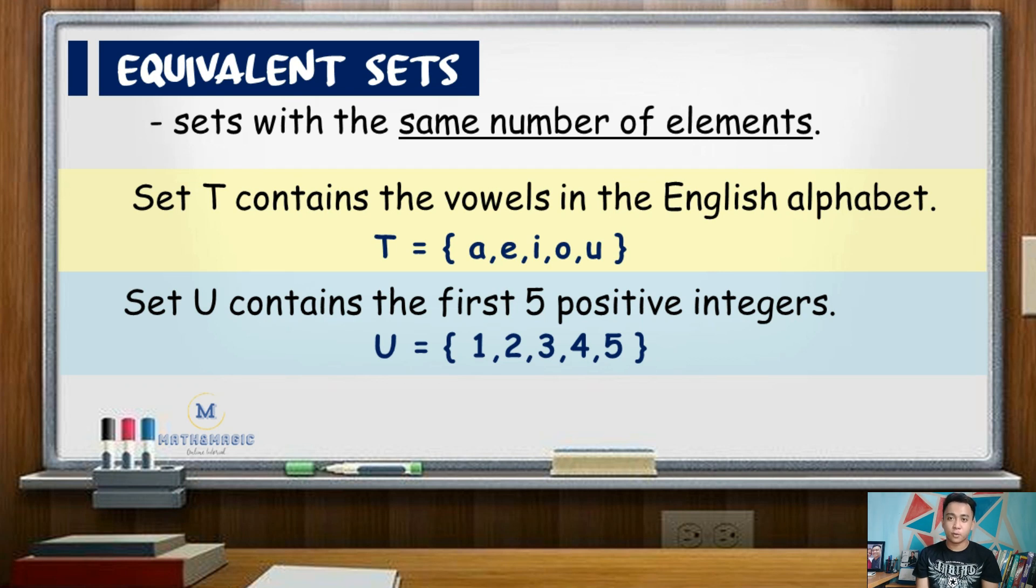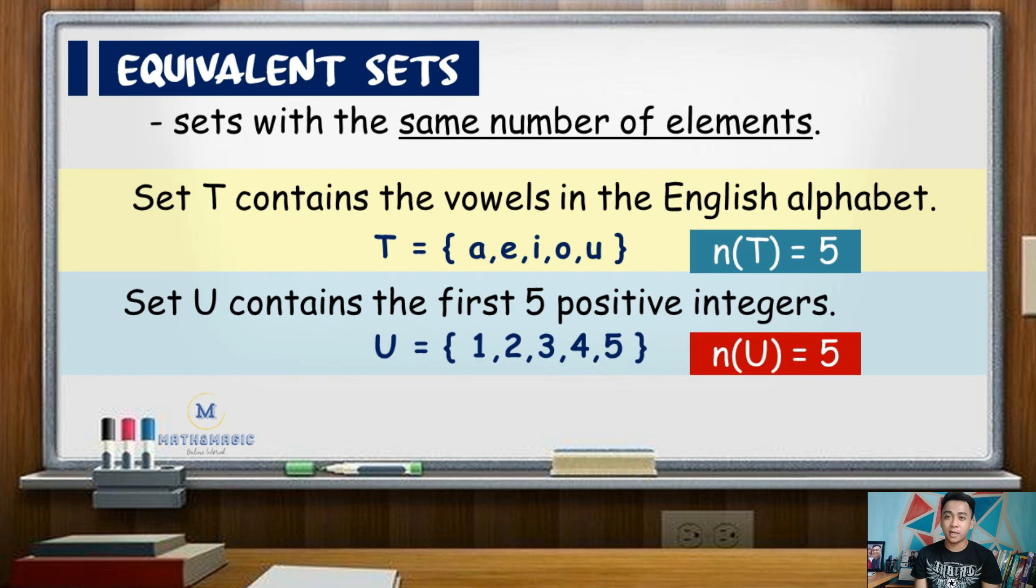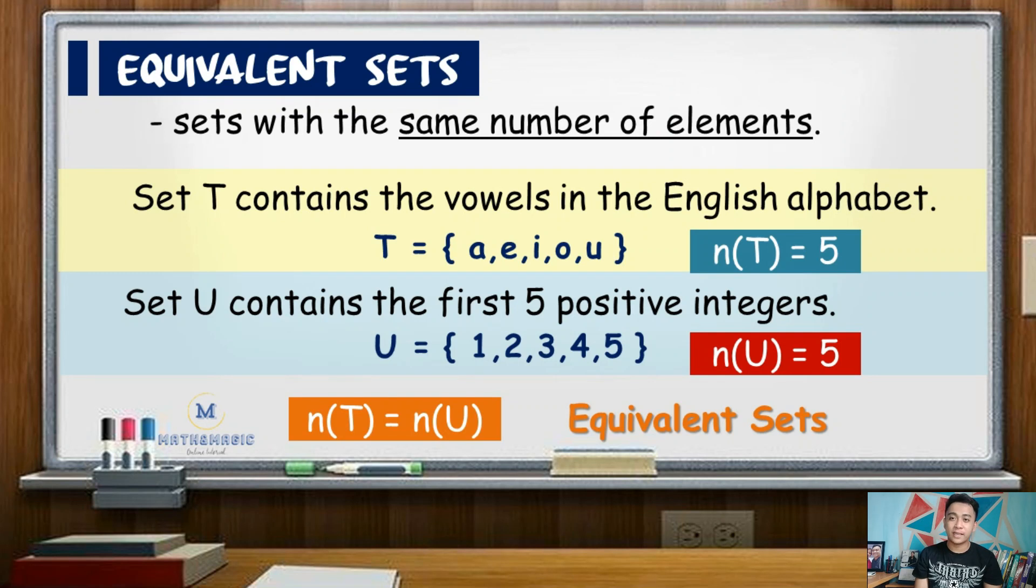Notice that each element in these two sets are different, but the number or cardinality is the same. Both sets T and U has five elements, therefore, these sets are equivalent. Also take note that equal sets are also equivalent sets.